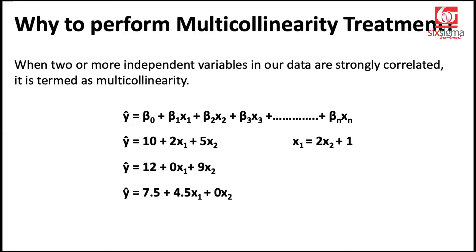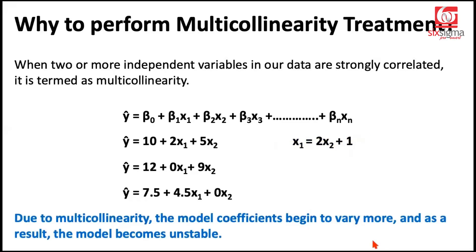Let's summarize. This is where we started, and we got two more equations like these. Now the point is that your model is really confused. The model doesn't know what are the right coefficients to rely on. And all of this is happening thanks to the correlation between x₁ and x₂. So if you see all the coefficients are varying now. The intercept here is varying between 7.5 to 12. The coefficient of x₁ is varying between 0 to 4.5. And the coefficient of x₂ is varying between 0 to 9. So the coefficients no longer are reliable. And as a result of this, we are not able to finalize the right equation. Again, why? Because we have multicollinearity in this case. So to sum it up, due to multicollinearity, the model coefficients begin to vary more. And as a result, the model becomes unstable. This is the reason we need to perform multicollinearity treatment.